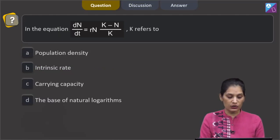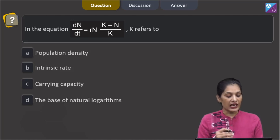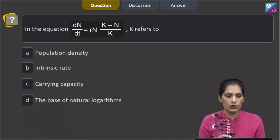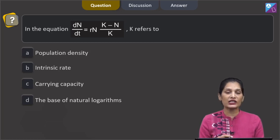Let us pick up the next question. This question is asking that in the equation dn by dt is equal to rn times k minus n upon k. This k refers to population density, intrinsic rate, carrying capacity, the base of the natural logarithms.